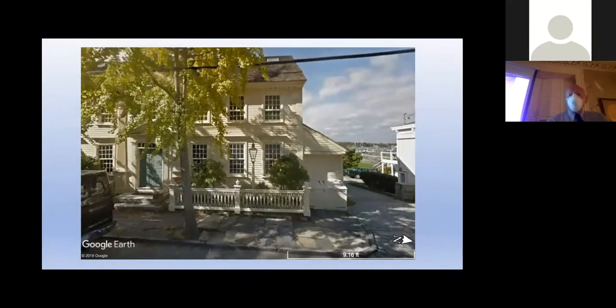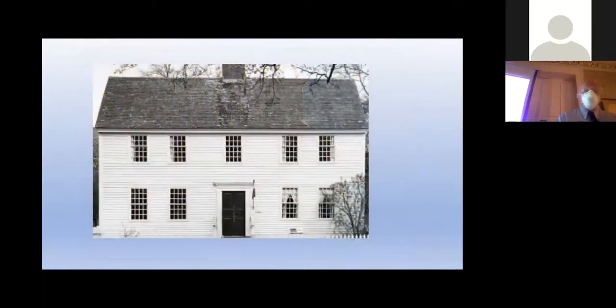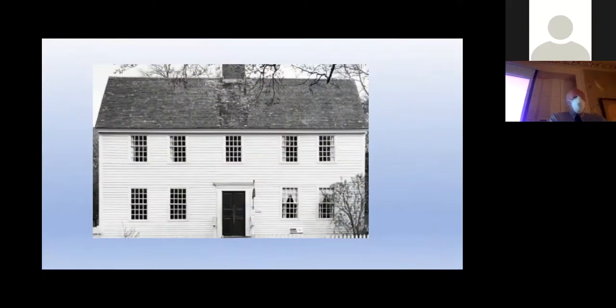Here's Nat Palmer's birthplace, 94 Water Street, down just about at the corner of Water and Harmony. Beautiful Georgian style with all of the elements of Georgian architecture, balance on both sides. We've got our central door, our palladium window hidden by the tree. It's just gorgeous.